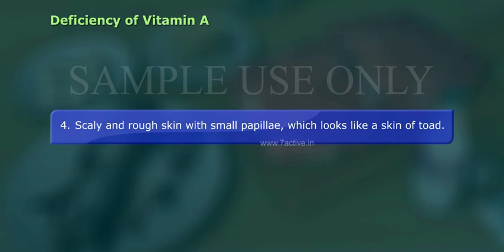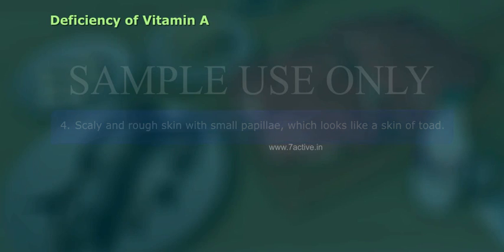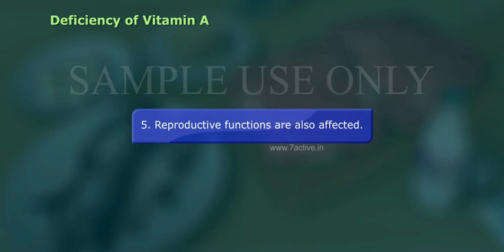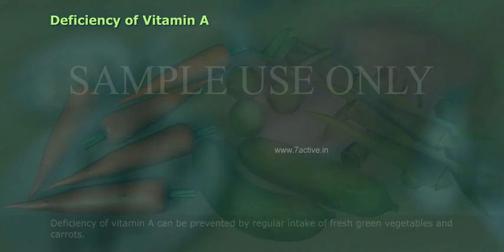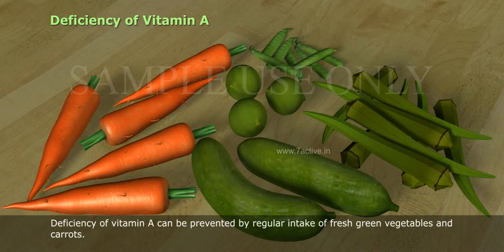4. Scaly and rough skin with small papillae which looks like the skin of a toad. 5. Reproductive functions are also affected. Deficiency of Vitamin A can be prevented by regular intake of fresh green vegetables and carrots.